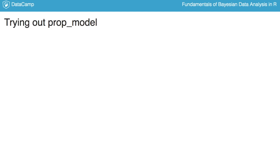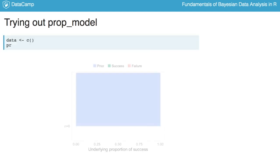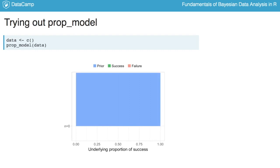Let's start by seeing what happens when we run the model with no data. We get a big blue square. The x-axis shows different values for the proportion of success, and the y-axis shows the probabilities of the different values. The blue square is a uniform probability distribution saying that any proportion of success has equal probability. It's labeled 'prior' because one assumption of the model was that prior to seeing any data, any underlying proportion of success was equally likely.